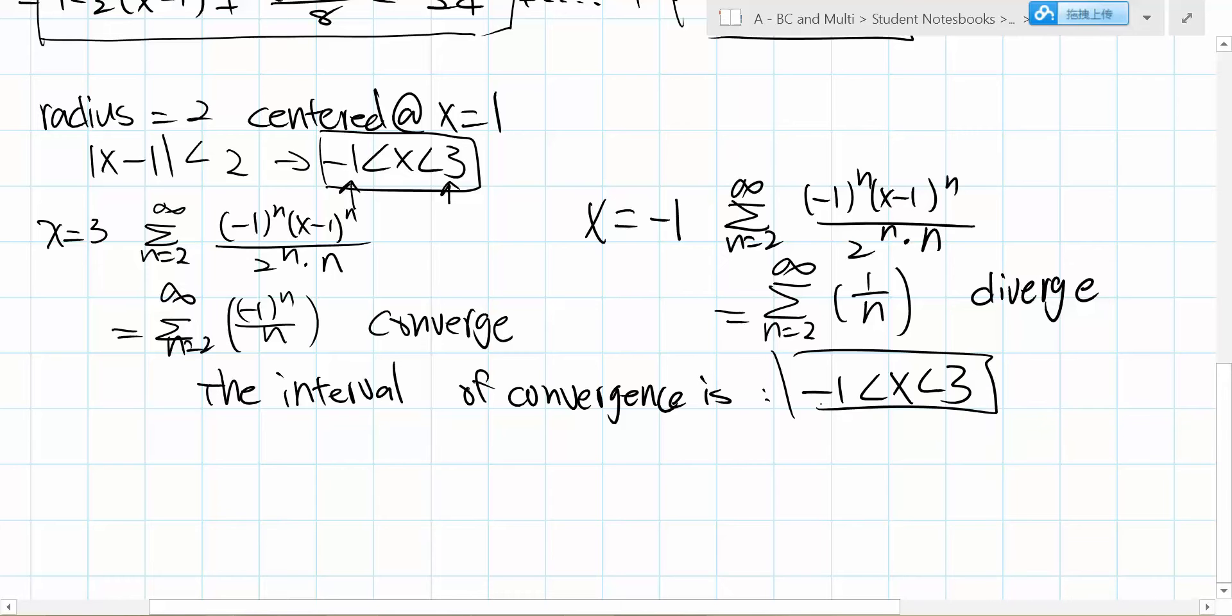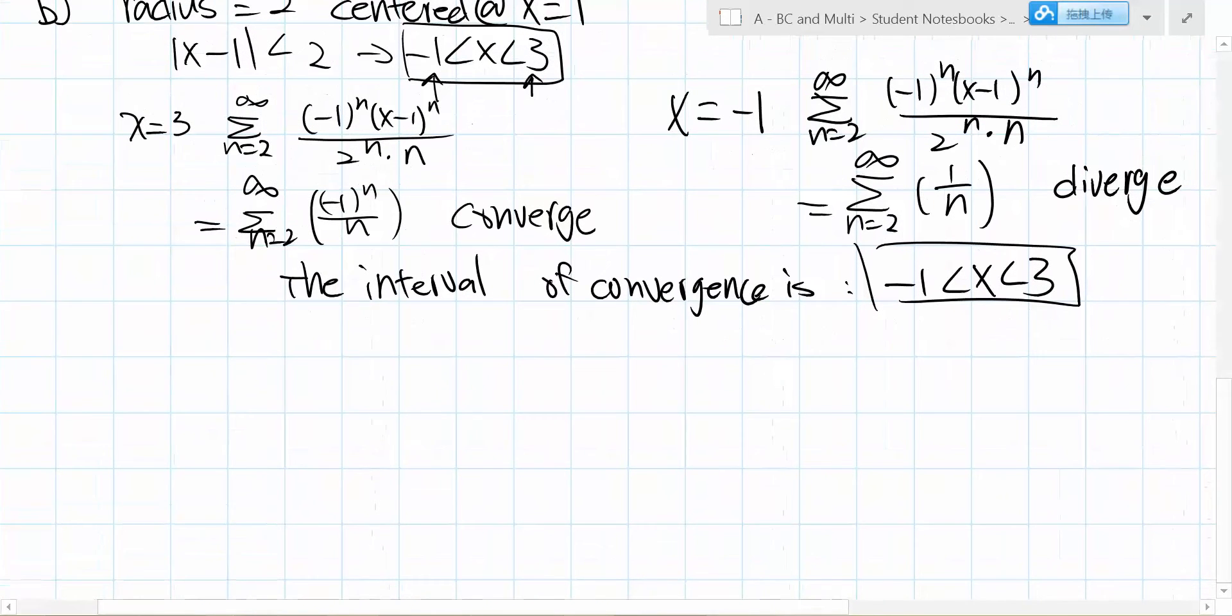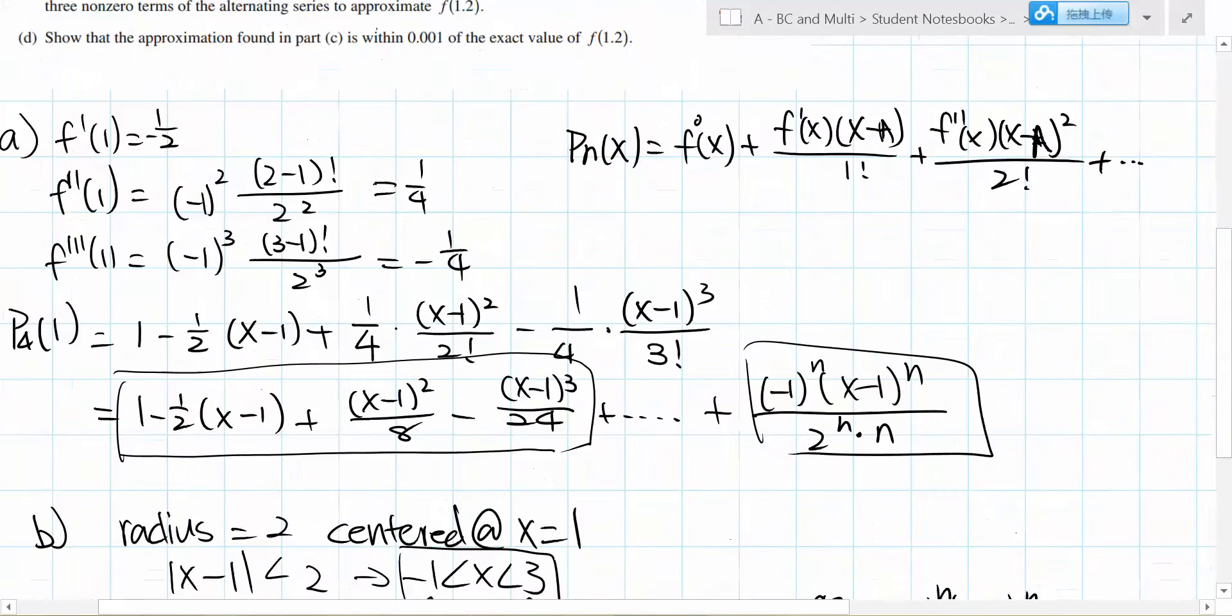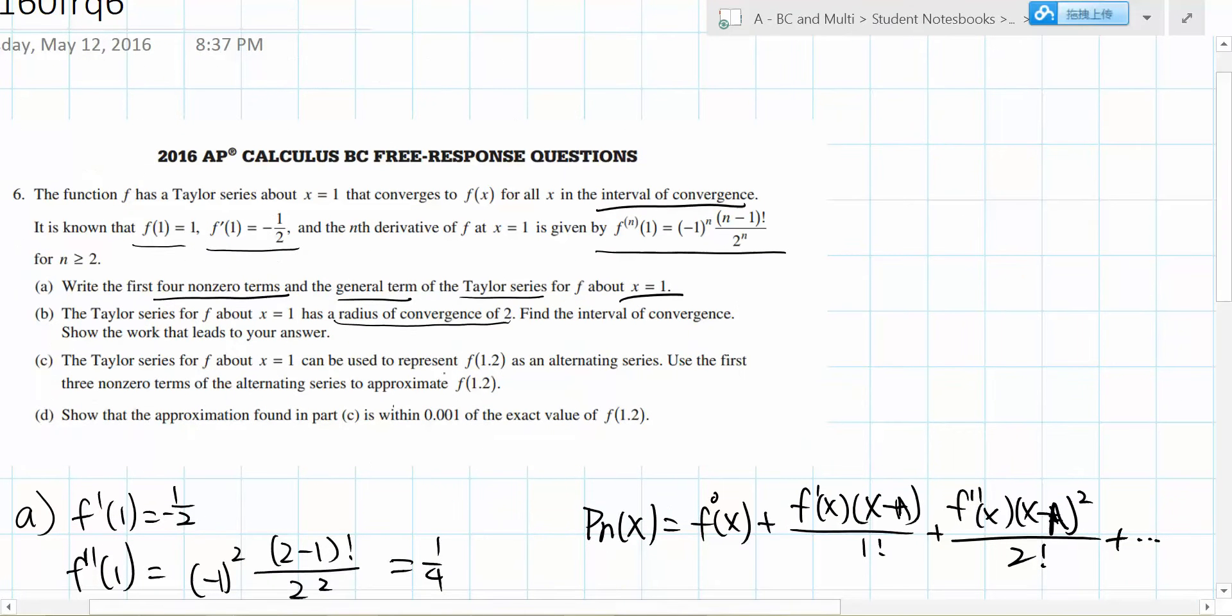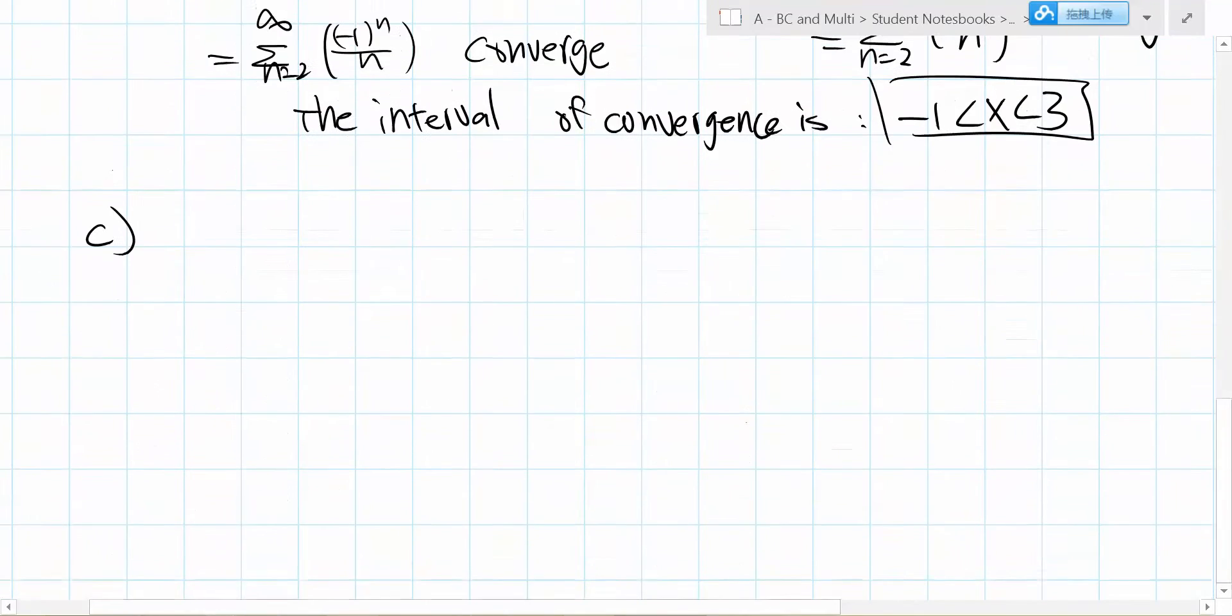Let's move on to part c. Part c asks us to find f(1.2) using the first three non-zero terms.